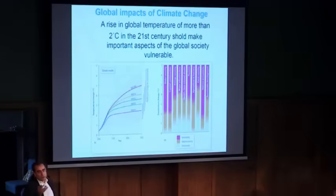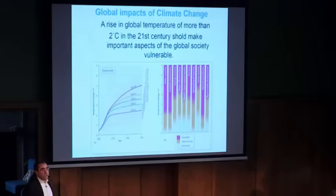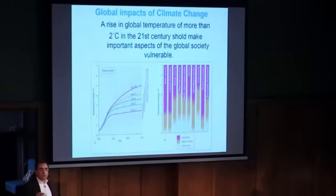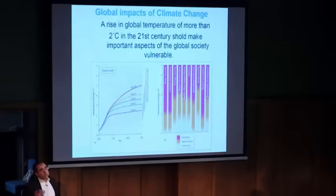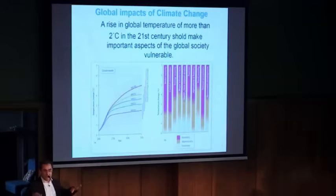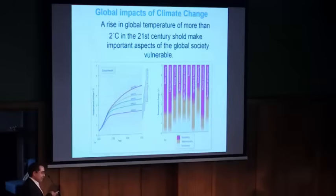The problem is that if there are natural oscillations and the temperature will remain below the two Celsius limit because of the natural oscillation of the system, then we may not need to reduce too much our emissions. So the economic problems will be very different. The problem of understanding the oscillation of the climate system is therefore very, very important.